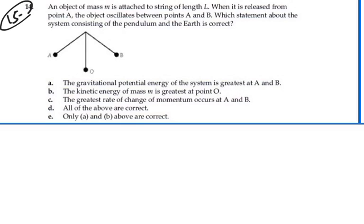Statement A: The gravitational potential energy of the system is greatest at A and B. Yes, it is. Because O is our lowest point, A and B are our greatest height above that point. Hence we have our greatest gravitational potential energy at those points. So A is definitely true.